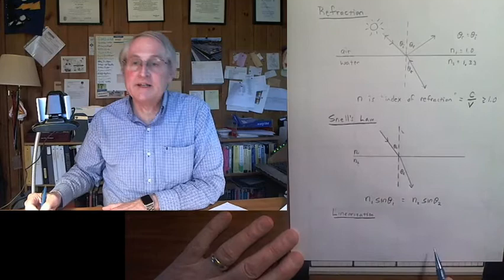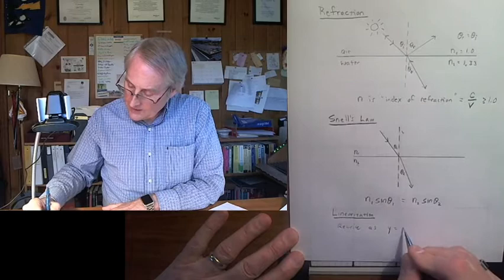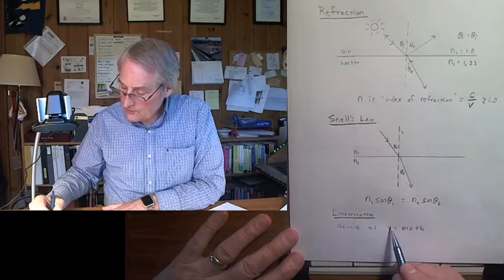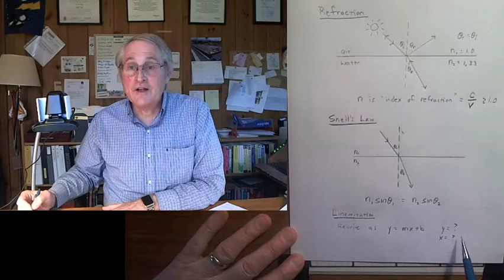And you have to provide the linearization. What we want to do is rewrite as y equals mx plus b in the form of a straight line. And so you've got to find variables y equals what, and x equals what, that you can plot this and get a straight line.